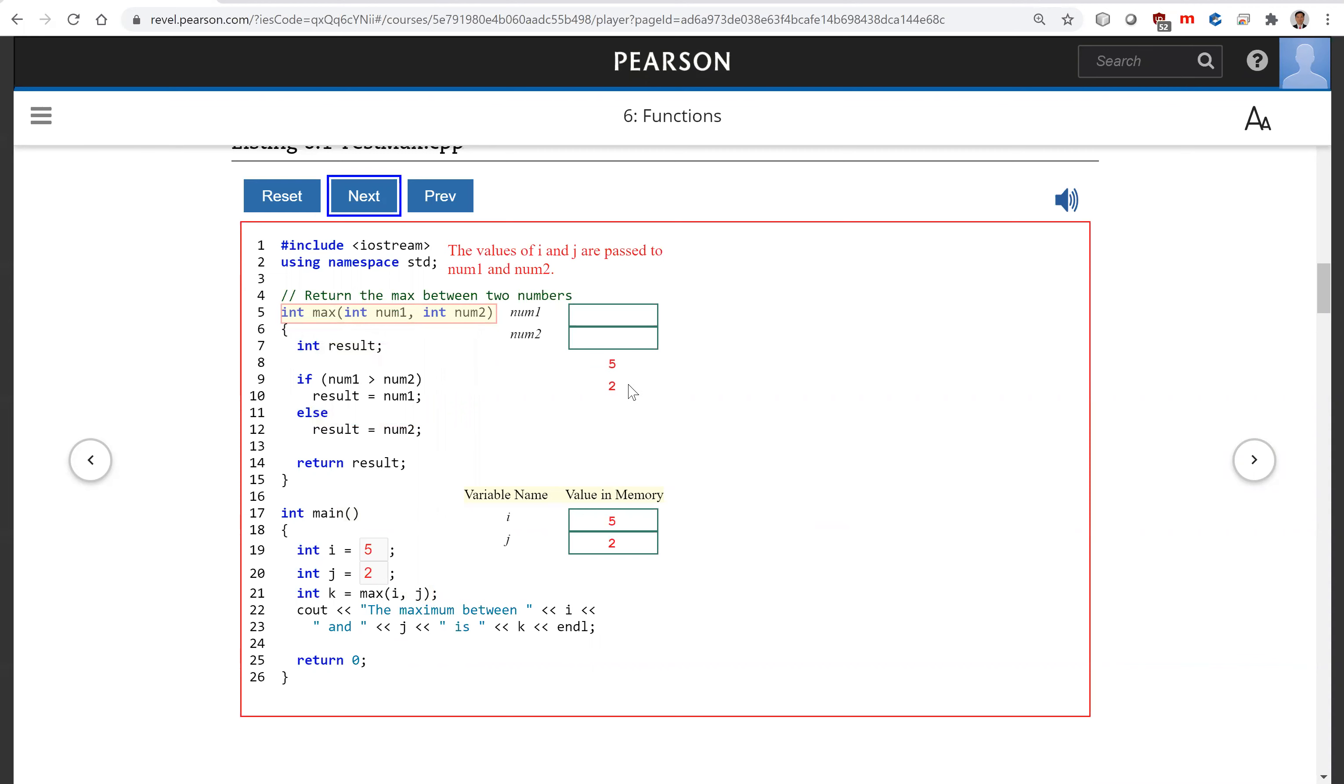So let's continue to look at it. Let us continue to see how it works. The max function is invoked. Now the values of i and j are passed to num1 and num2. So this num1 and i, they have the same value, but they are independent variables. Variable result is declared. The condition num1 is greater than num2 is tested. It is true in this case. Num1 is assigned to result. The result will be returned from the max function.